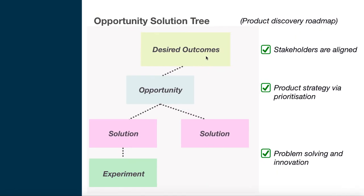When working with desired outcomes, people typically use OKRs to define metrics and key results. For opportunities, teams identify customer pain points, needs, and wants through elicitation, requirement gathering, and feedback. For solutions, teams use hypothesis-driven development, brainstorming, and other tools to define solutions and experiments.